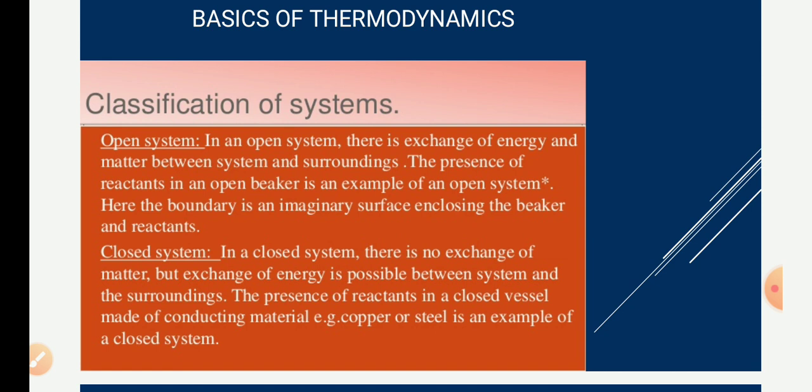In a closed system, there is only an exchange of energy — not matter. Such systems are called closed systems. An example of a closed system would be putting an ice pack on an injury. The ice pack absorbs energy and relieves the pain — energy transfers but not matter. Another example of a closed system is a mixture of petrol vapor and air inside the combustion chamber of an engine.